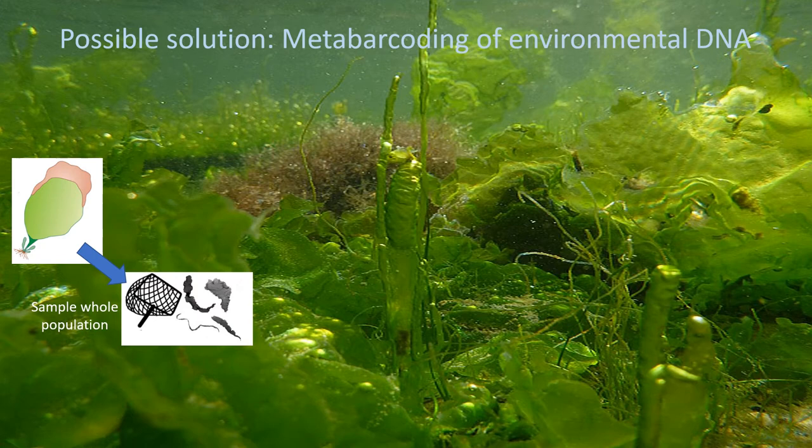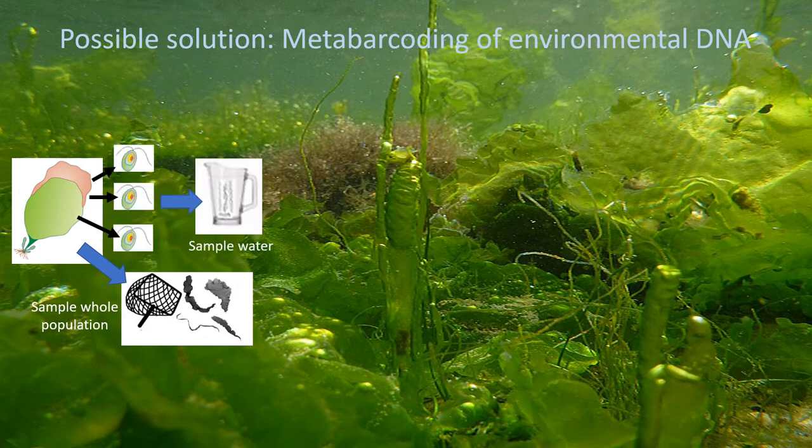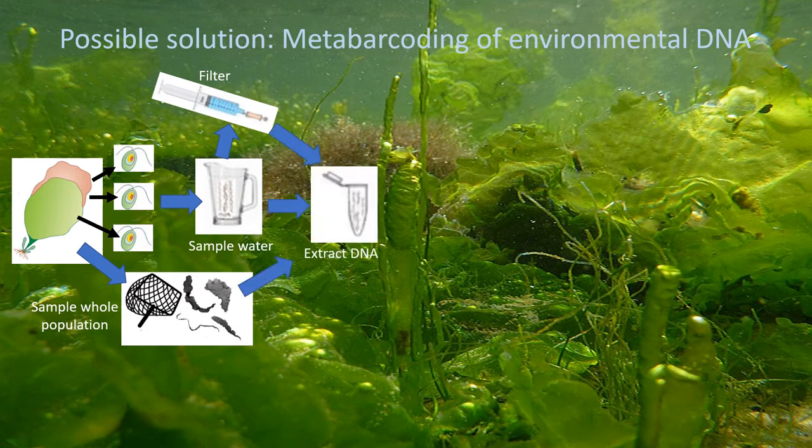A way out could be meta-barcoding of eDNA. Meta-barcoding allows sampling of whole populations of algae, or sampling of just water that contains DNA traces of algae — for example, because they release zoospores. The water can then be used as it comes, or it can be filtered to enrich algal particles.